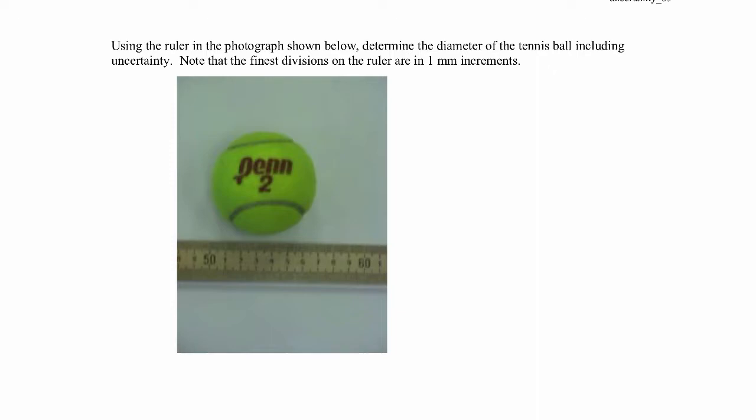We're using a ruler to determine the diameter of this tennis ball. We have the tennis ball here, the ruler here, and we want to include some uncertainty. The finest divisions on the ruler are one millimeter increments. That's kind of tough to see, but they're in one millimeter increments.